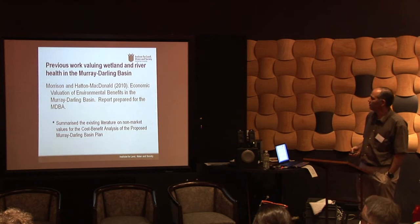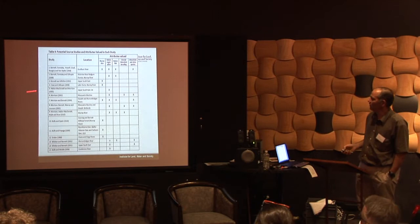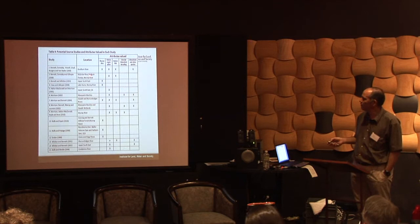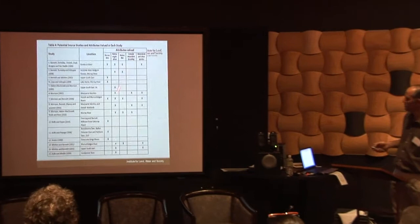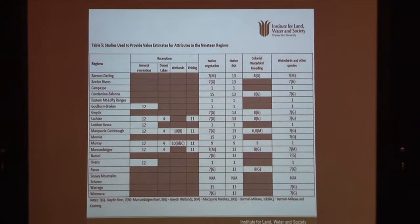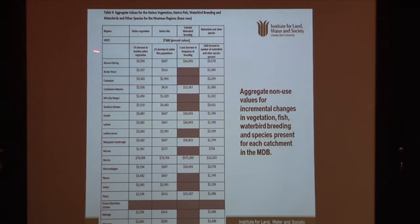Myself and Darla Hatton-McDonald, for the Murray-Darling Basin Plan, did a large synthesis report bringing together all existing literature on values that could be used for cost-benefit analysis of the basin plan. We found 15 studies done across a range of locations in the Murray-Darling Basin, valuing things like recreation, vegetation, fish, waterbird breeding, and other species. We then looked at which studies should be used for valuing each of the different catchments, and recommended aggregate values that could be used in a cost-benefit analysis.